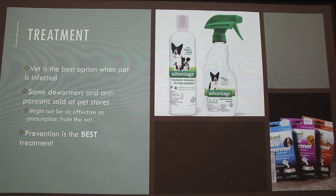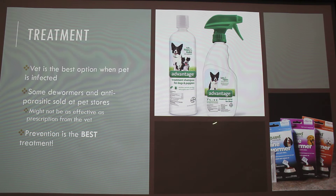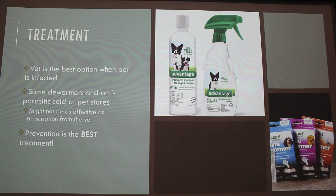The vet is probably the best option if your dog has intestinal or external parasites, especially intestinal ones because they cause a lot of problems. Some dewormers and antiparasitic products are sold at pet stores. For external ones like fleas, ticks, and mosquitoes, you can get flea shampoo and sprays at PetSmart. It's really important to check that products kill the eggs too, because if you're only killing the adults, the cycle will keep continuing. A lot of over-the-counter products surprisingly only kill adult fleas, so that cycle just keeps going. These may not be as effective as something prescribed by a vet.